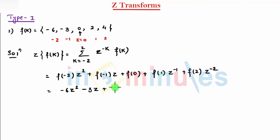and this is 0. So, I directly write, f of 1, that is 2, z raise to minus 1, plus 4, z raise to minus 2. So, that is my z of f of k.